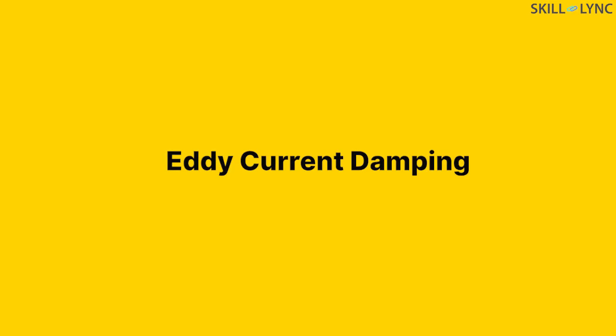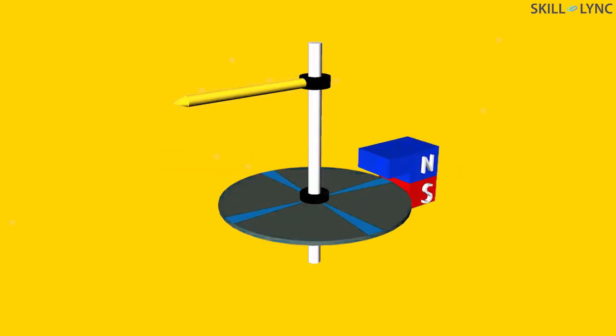Next, we have eddy current damping. In eddy current damping, the eddy current principle is used. Here, a disc is placed in between a magnetic field. When the pointer moves, it will lead to the movement of the disc placed between the magnetic field. Now, as the disc moves, it will cut the magnetic field between which it was placed.